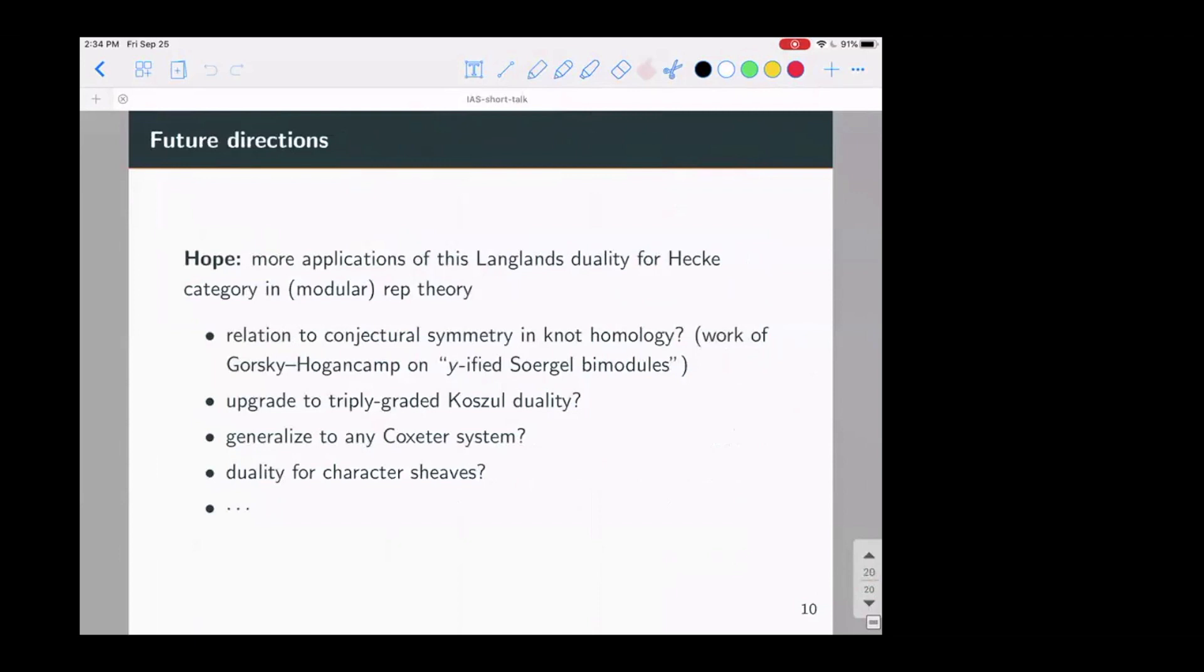So the hope is that this language where the Hecke category will find more applications in modular representation theory. So there's some things I'm still working on trying to relate this to conjectural symmetry in knot homology. There might be generalization to Coxeter systems that are not even Weyl groups. This should be related to some duality of character sheaves. I'll end there.